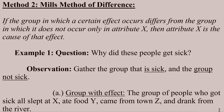The next method we'll talk about is Mill's Method of Difference. We could explain it by saying that if a group in which a certain effect occurs differs from the group in which it does not occur in only one attribute, attribute x, then that attribute is the cause of the effect.